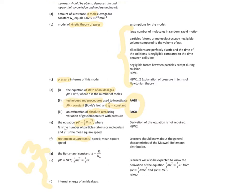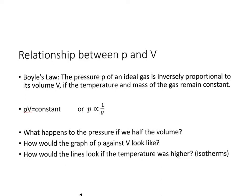So we're going to start with the equation of an ideal gas and how we end up at that point. What is the relationship between pressure and volume? Remember that lowercase p stands for pressure and capital V stands for volume. The first law is Boyle's law — it relates the pressure of an ideal gas to its volume, but only if the temperature and the mass are constant.